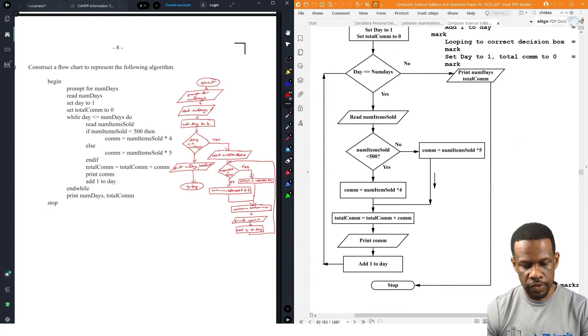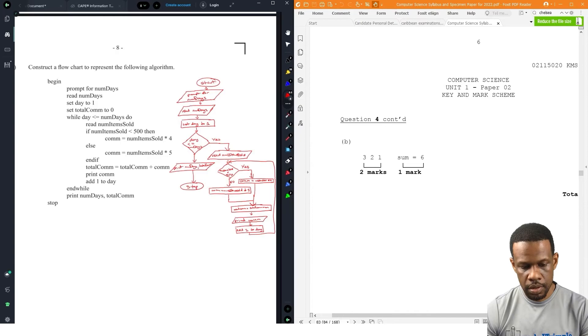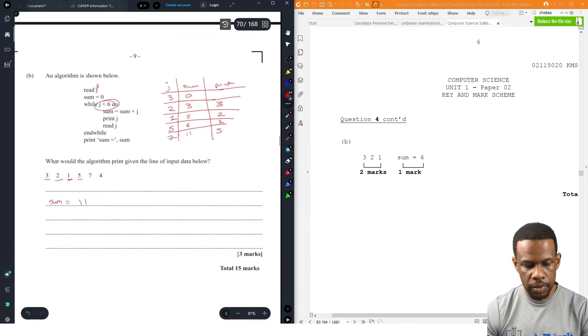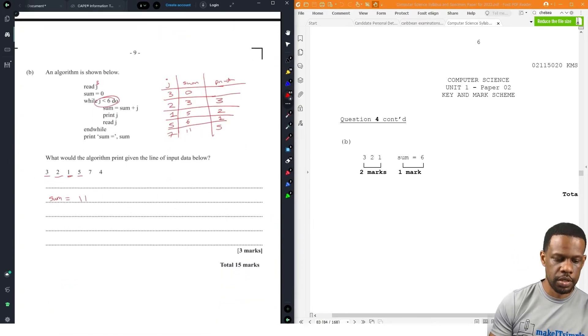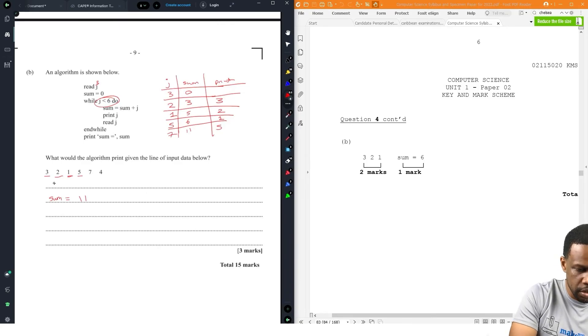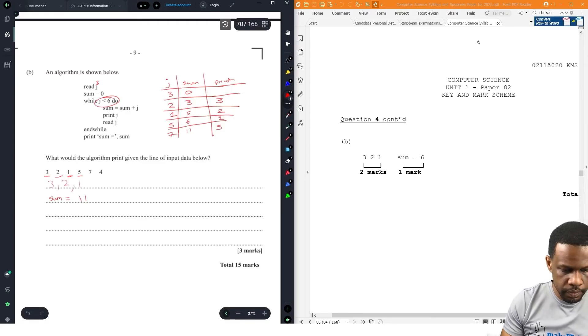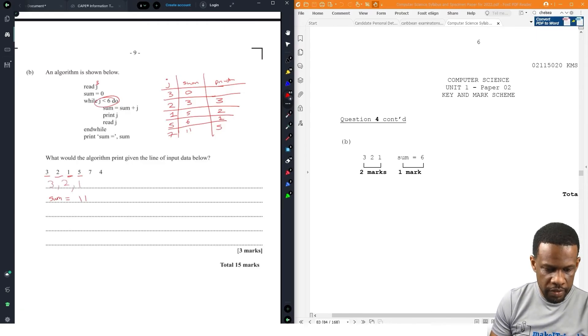They didn't tell you to do the trace table, they just say what will the algorithm print given the input. So if you just put sum is equal to eleven, you get three marks? I doubt. Let's see if the flowchart line up. They put that stuff on the left hand side, that's cool. Oh I didn't put three two one. It did say print j. Yeah so it should print three two one. Wait, why wouldn't it print the five though?